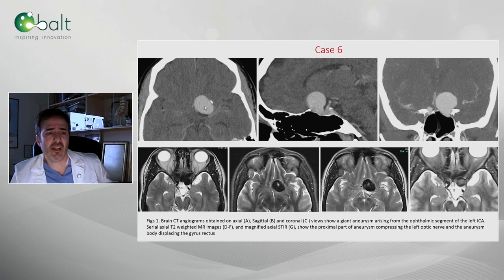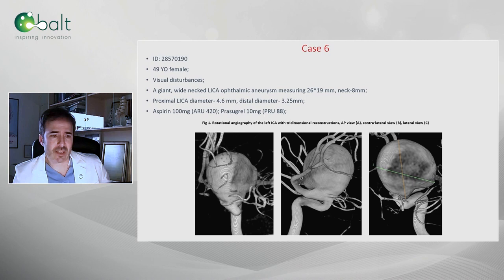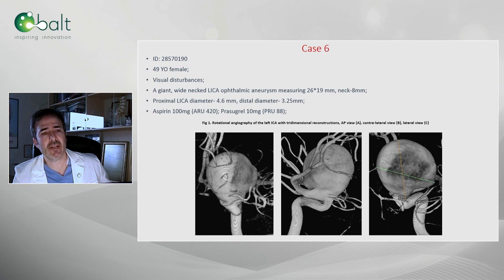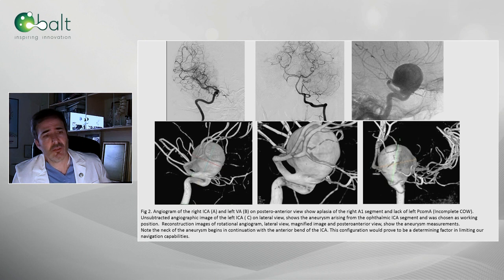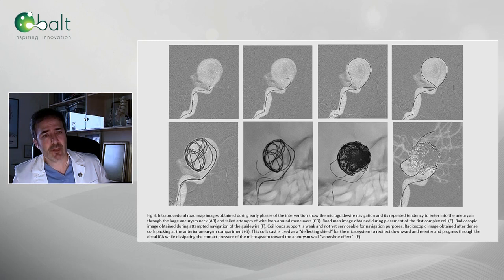Case 6: a close-to-giant carotid ophthalmic aneurysm causing visual alterations in a young nurse. As you can see here, those are the images. This is the wide neck of the aneurysm. Prasugrel was given, PRU was 88. In this particular case, we tried to check the Circle of Willis if there was any chance for constructive techniques. In fact, the Circle of Willis was incomplete, so we went for reconstructive techniques. The most problematic step was to cross across the aneurysm neck.